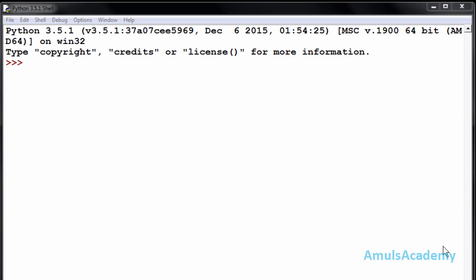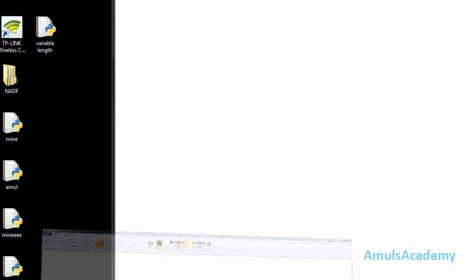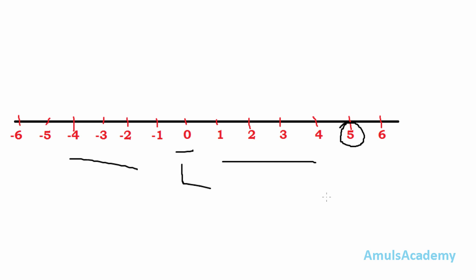First we will discuss about the absolute function. The absolute function gives the distance of a value from zero. For example, if you want to find out the absolute value of five, it is the distance of the value five from zero. Here we can see value zero, on the right side positive numbers and on the left side negative numbers. The absolute value of five is one two three four five — that is, five.